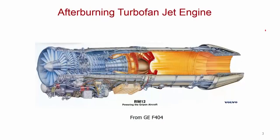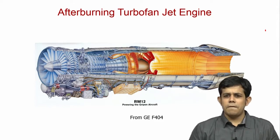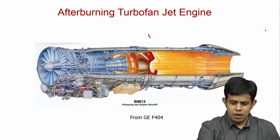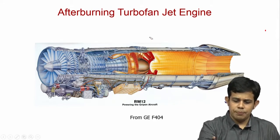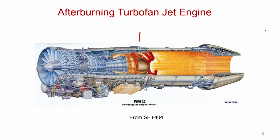This is how an afterburning turbofan jet engine looks. The previous turbojet engine we had shown did not have the afterburner part. In the front you have the fans, then a few stages of compressors, and then the combustion chamber — the main gas turbine combustion chamber — which we discussed so far.